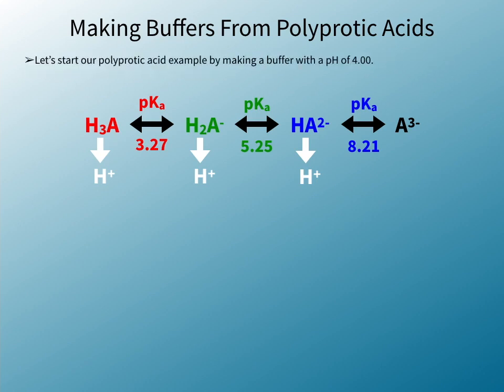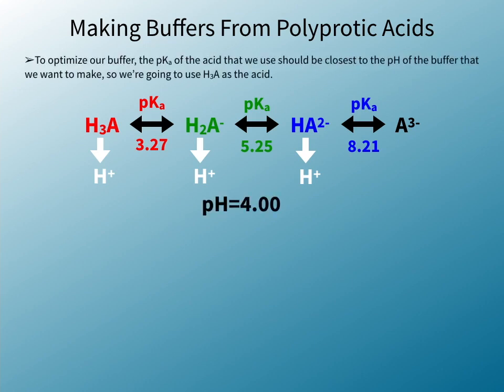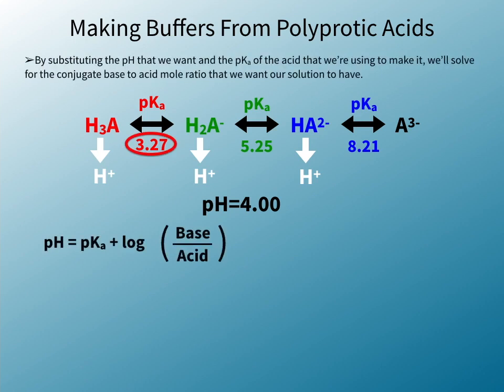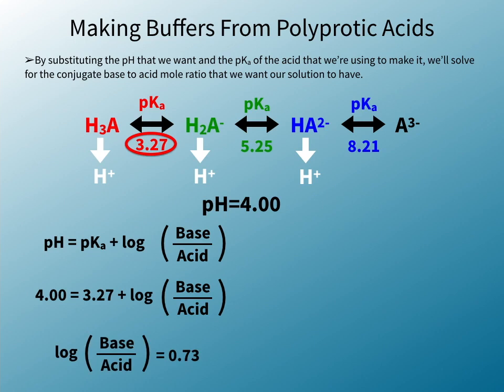Let's start our polyprotic acid example by making a buffer with a pH of 4.00. To optimize our buffer, the pKa of the acid that we use should be closest to the pH of the buffer that we want to make, so we're going to use H3A as the acid. By substituting the pH that we want and the pKa of the acid that we're using to make it, we'll solve for the conjugate base to acid mole ratio that we want our solution to have.